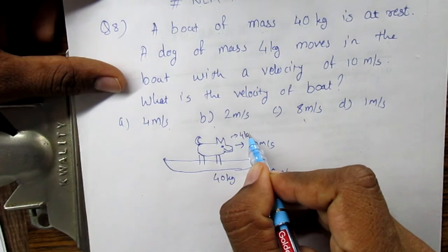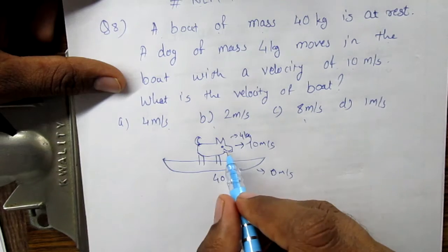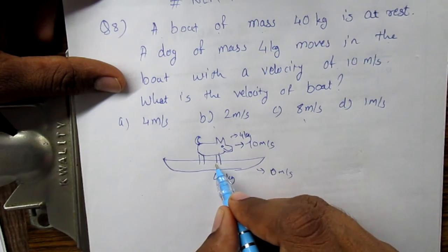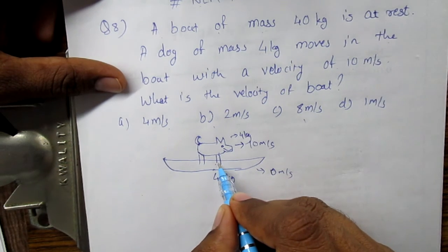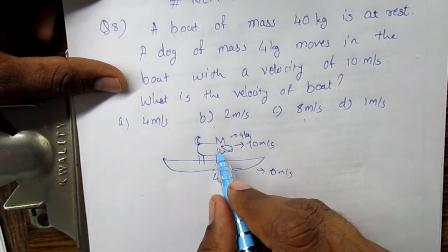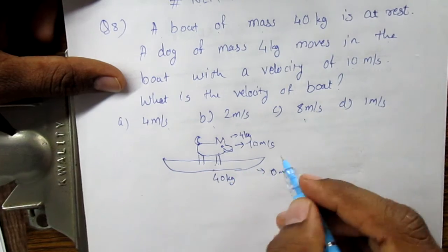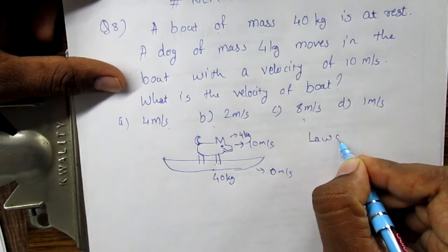So in this system, the dog exerts force on the boat. In return, the boat exerts the reaction force on the dog. So the forces are internal in the system. We can use the law of conservation of linear momentum.